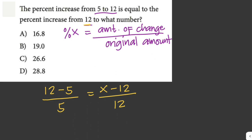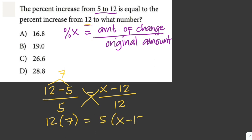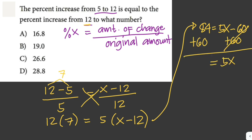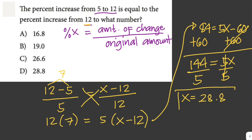Now we can solve. We cross multiply: 12 times 7 equals 5 times (x minus 12). This gives 84 equals 5x minus 60, so 5x equals 144. We divide both sides by 5 and get x equals 28.8. So the answer here is letter D.